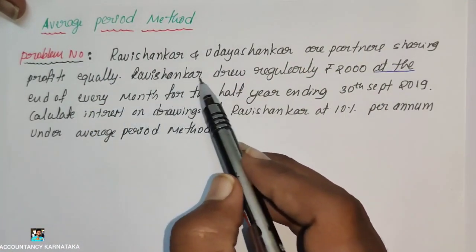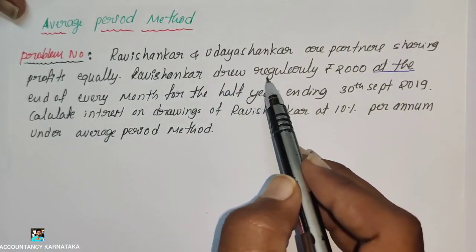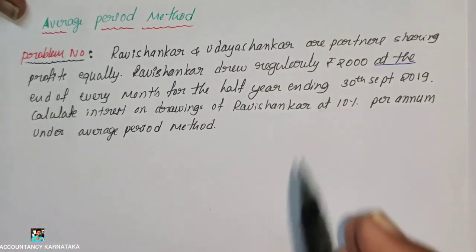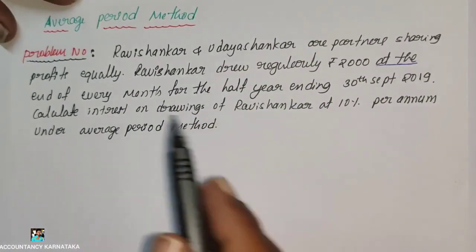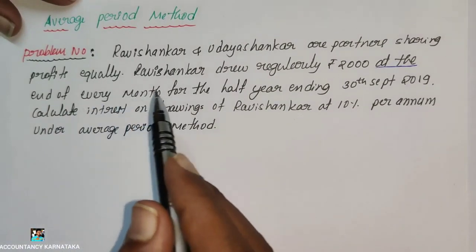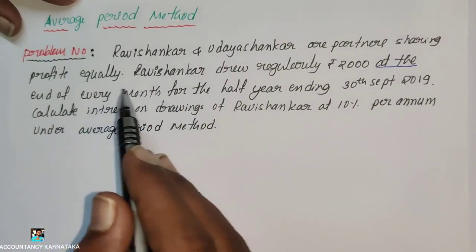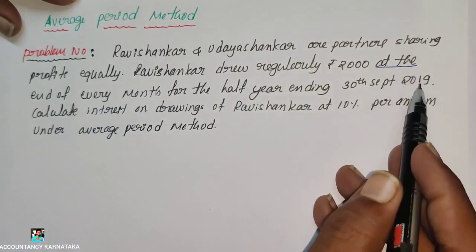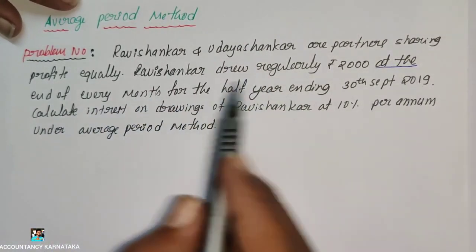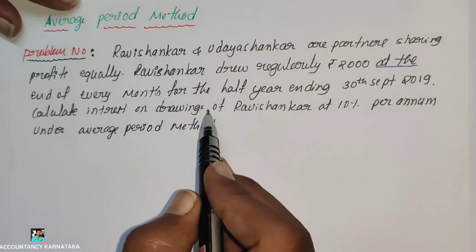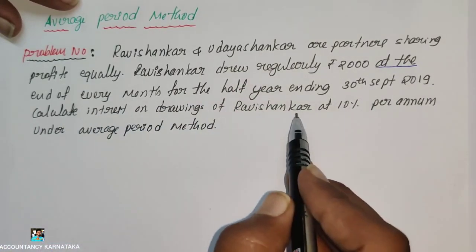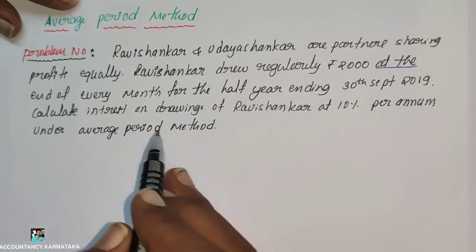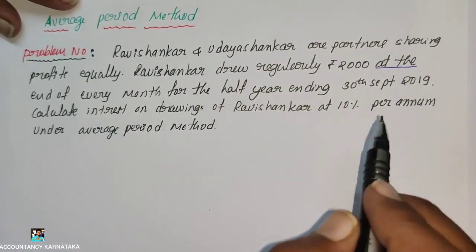Ravi Shankar drew regularly rupees 2000 at the end of every month, for the half year ending 30th September 2019. Calculate interest on drawings of Ravi Shankar at 10% per year under the average period method.